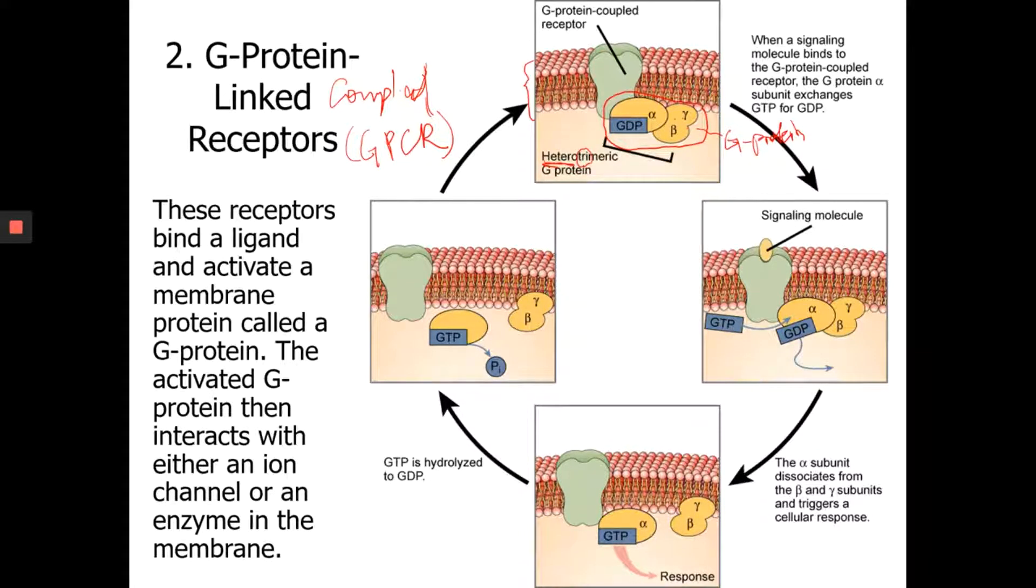So if you have three alpha subunits, that's not going to be hetero because they're the same. So since they're all different, we call them hetero, and then there are three, trimeric G-protein.